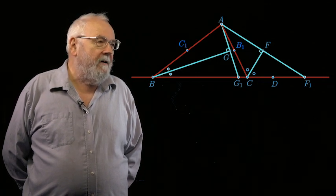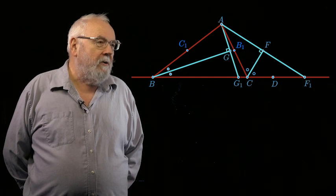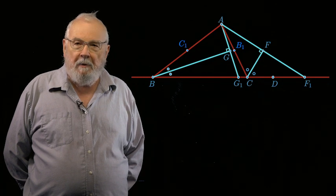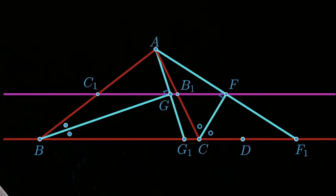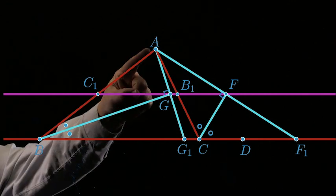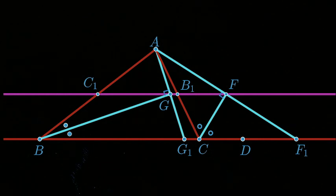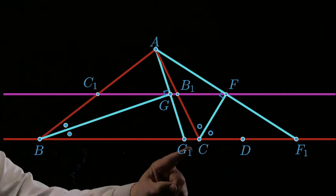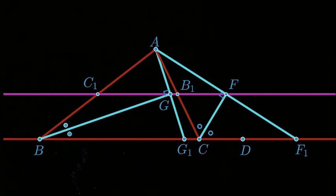Well, this is all very interesting, because it means that we have the option of bringing an enlargement argument into play. Let's have a go at that. So let's consider the enlargement from A with scale factor a half. Because what that will do is it will drag the point B to C1 and the point C to B1. And from what we've just done, it will drag F1 to F and G1 to G.